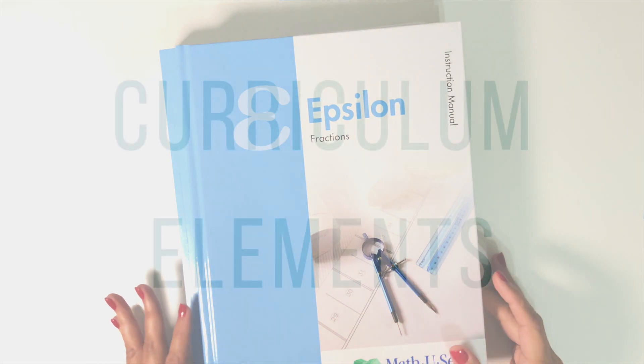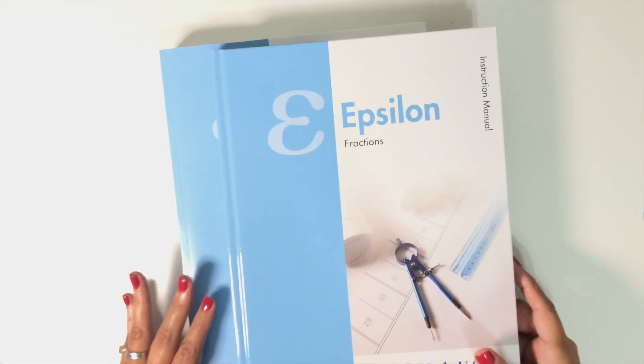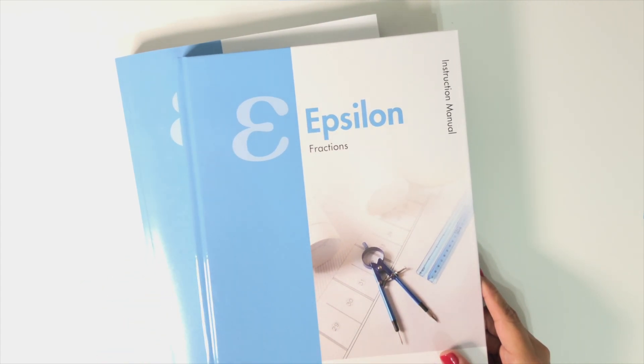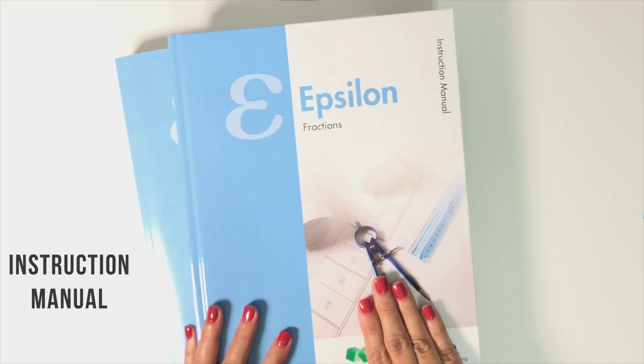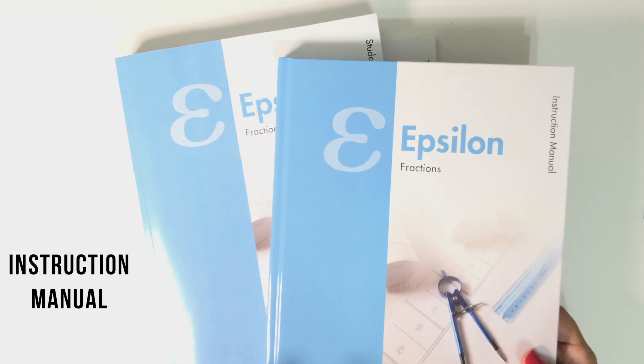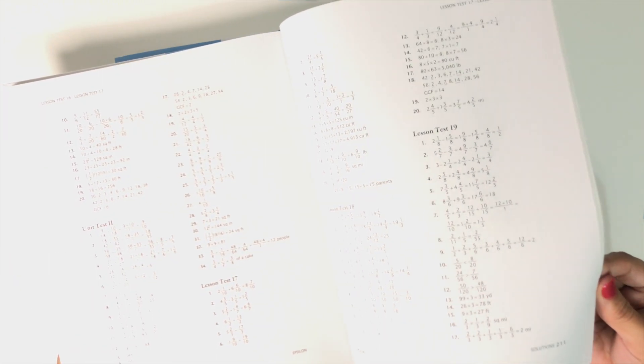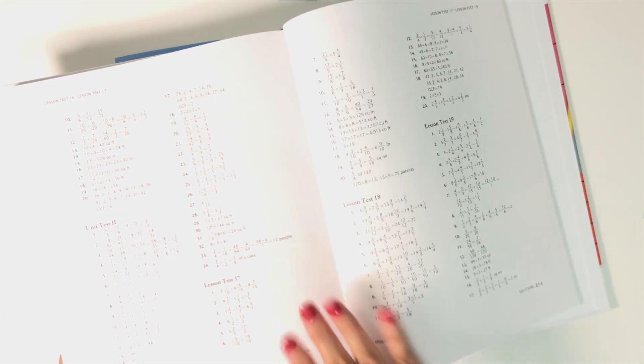There are a lot of things that go with Math-U-See. You'll need to decide what you need, what you have, what you don't have, and what you're going to need for each student. The core elements for this level are the instruction manual, which contains the answer key both for the workbook and the tests in the back. That's important to note because for a while there I was like, where's the answers to these lessons, these tests, and they were in the back of this.